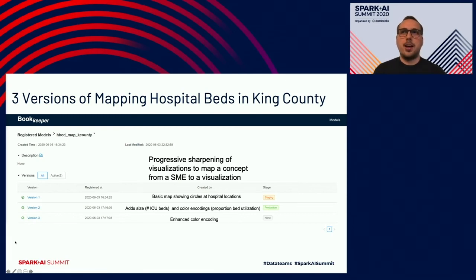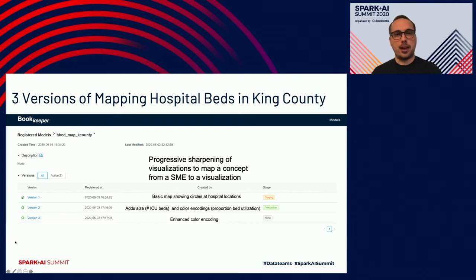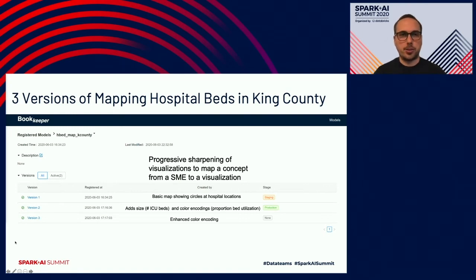We can look at that and say that's a great first step, but it'd be a lot more digestible if you mapped the size of the dots to the number of ICU beds and encoded availability with a color encoding. So the person who works on visualizations will go and update the model for mapping that chunk of data to the visual. Maybe version three is an enhancing of that color encoding to better communicate availability.